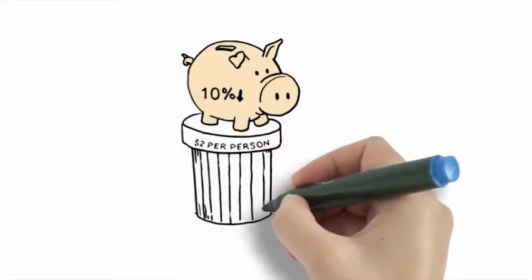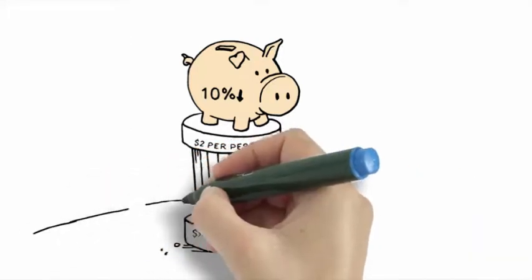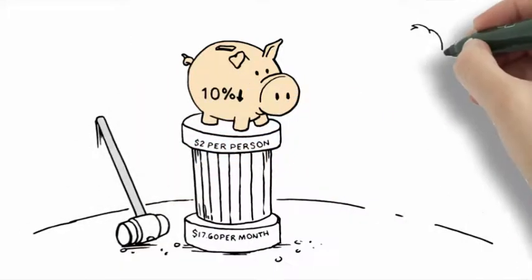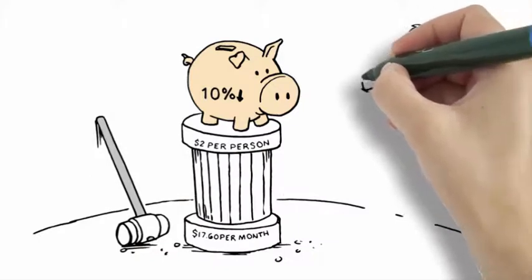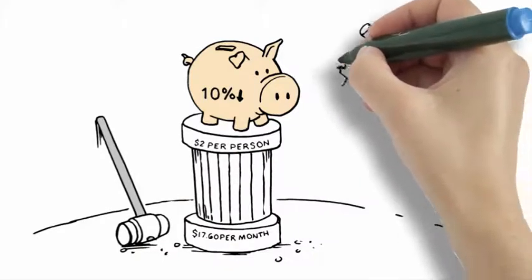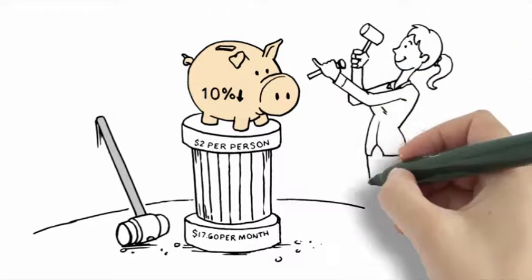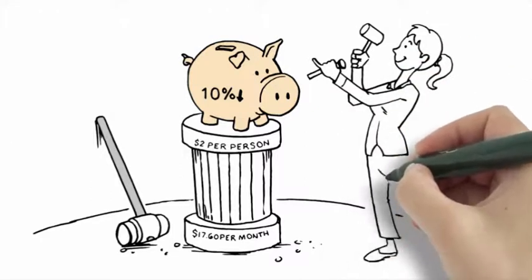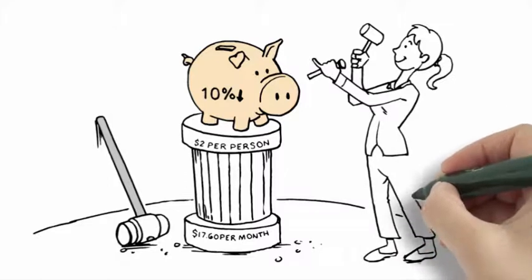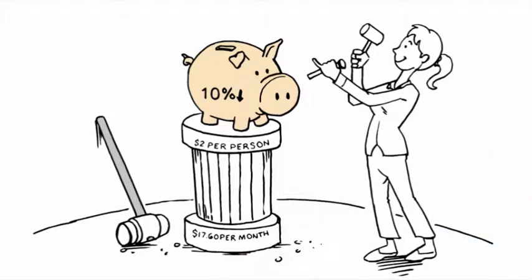The administrative expenses for a typical ACO, excluding claims processing and marketing, average $17.60 per person per month. So it's hard to justify traditional gatekeeper utilization review infrastructure costs for over half of the population. Insurance deductibles are a far more efficient tool for the healthy majority.